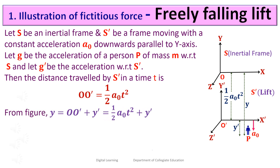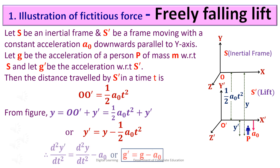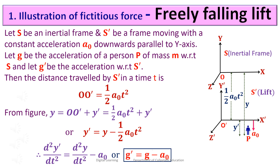Therefore, y' = y minus ½ A0 t². Differentiating twice with respect to time gives d²y'/dt² = d²y/dt² minus A0, or g' = g minus A0, where g' represents the acceleration experienced by a person in the lift or in frame S'.